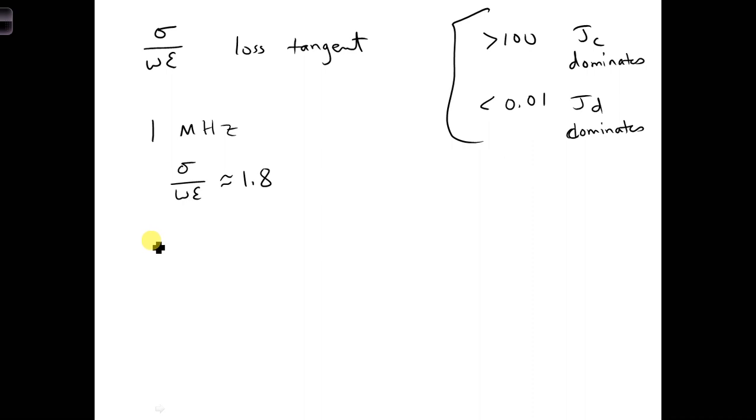And for the other end of our frequency range, sigma over omega epsilon is about equal to 0.006. So this means that at the really highest frequencies of our EMP E1 component, then it starts to have the displacement current dominate.